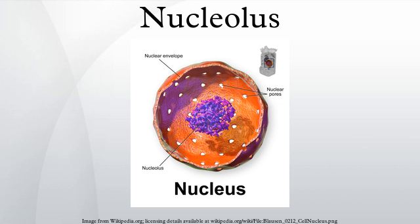Before 1964, the nucleolus was recognized as a morphological element within the nucleus, but little was known of its function. During that year, a study of nucleoli by John Gurdon and Donald Brown in the African clawed frog Xenopus laevis generated increasing interest in the function and detailed structure of the nucleolus. They found that 25% of the frog eggs had no nucleolus and that such eggs were not capable of life. Half of the eggs had one nucleolus and 25% had two. They concluded that the nucleolus had a function necessary for life.